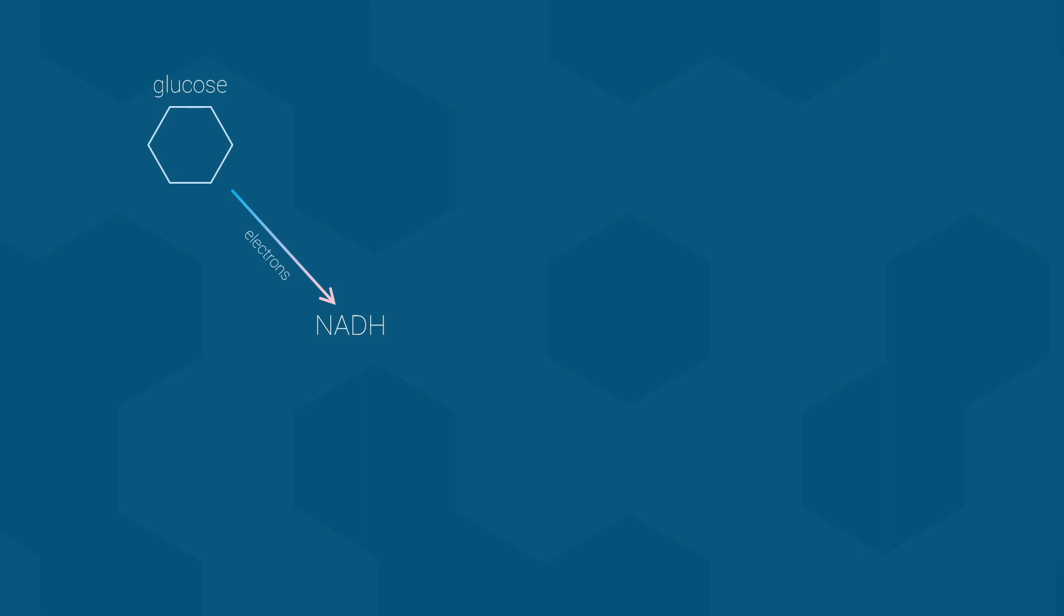This occurs during glycolysis, pyruvate processing, and the citric acid cycle. Those electron carriers can then be used as a source of electrons to reduce the electron transport chain and ultimately oxygen to form water. This occurs during oxidative phosphorylation. During all of this, potential energy is released and used to produce ATP.